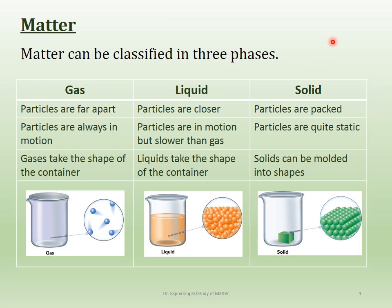Matter can be classified into three phases: gas, liquid, and solid. In gases, the particles are far apart and usually you can't see a gas unless it's colored. Gas particles are always in motion and gases take the shape of the container — for example, air fills the shape of the room. The fact that particles are in motion is proven by the fact that you can smell an aroma, like cookies baking.